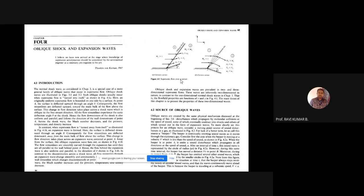Looking at the flow properties of the oblique shock wave, it will be inclined, so the wave angle will be less than 90 degrees. That wave angle may be positive or negative depending on the direction of motion. The higher the wave angle, the higher will be the strength of the oblique shock wave. The upstream Mach number will be greater than one because all shock waves form only when the Mach number is greater than one.